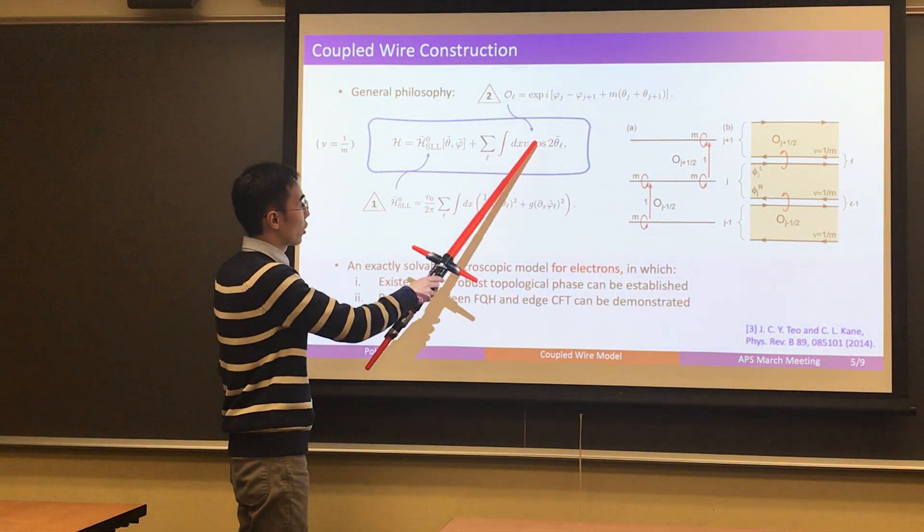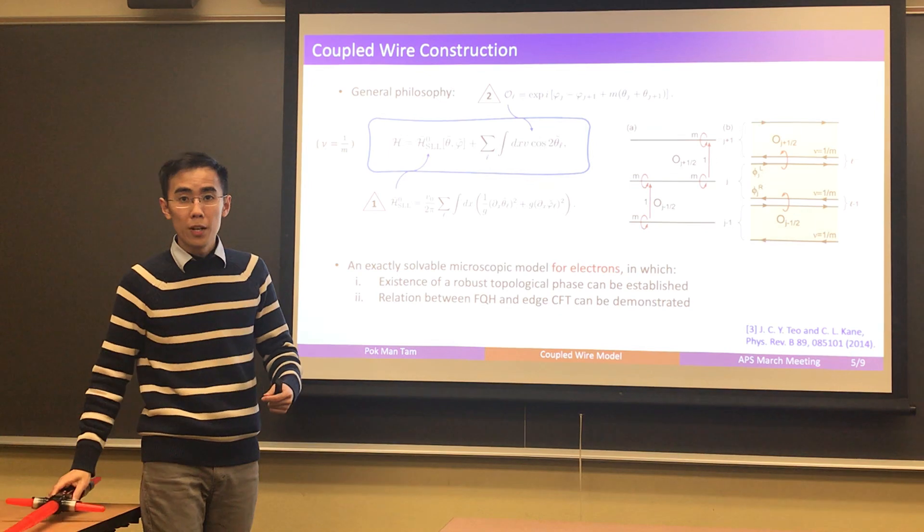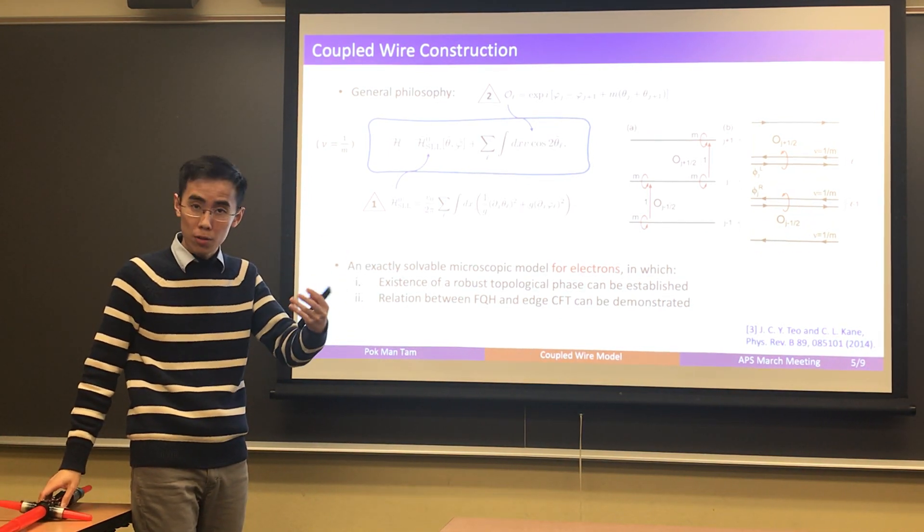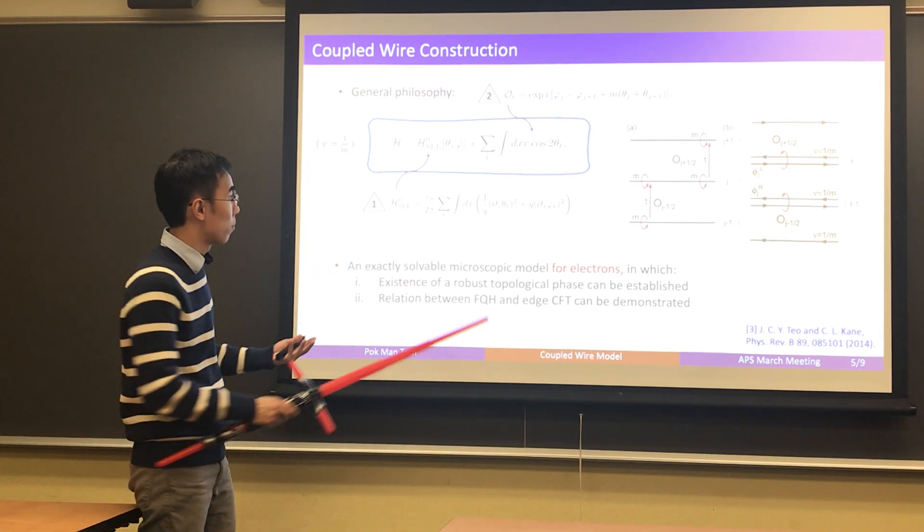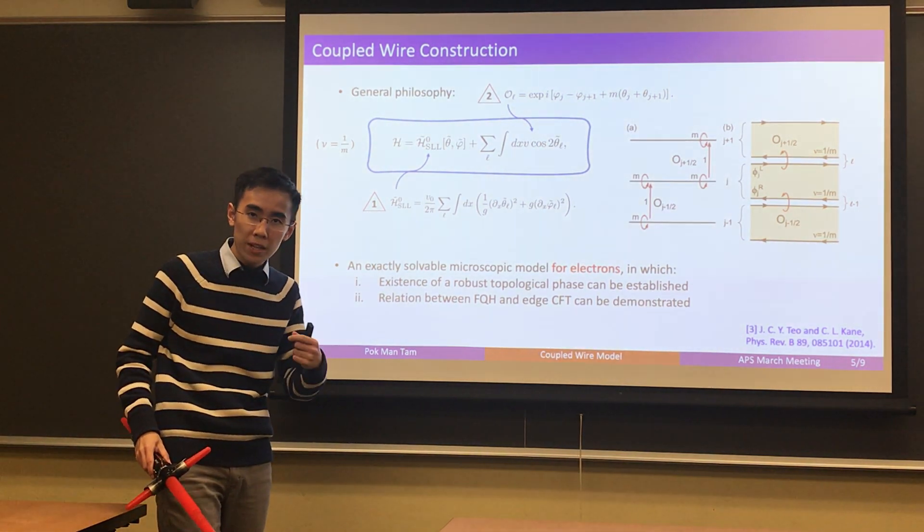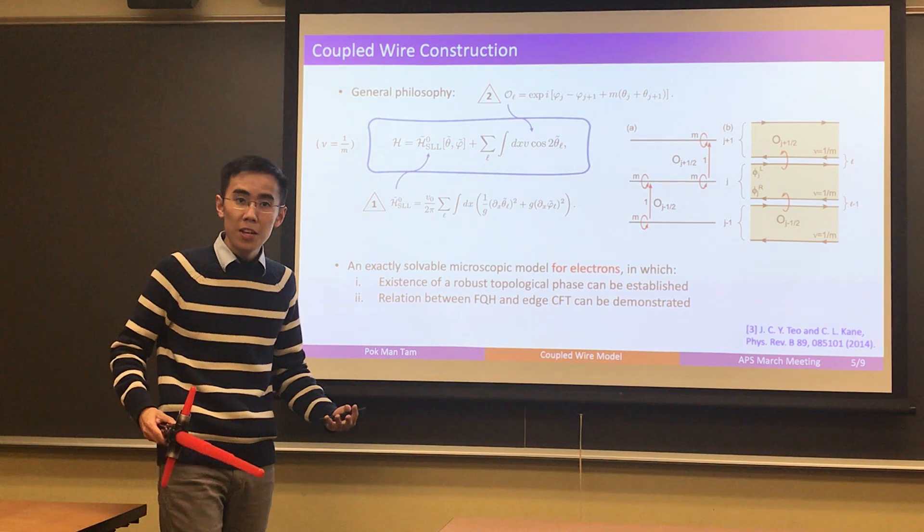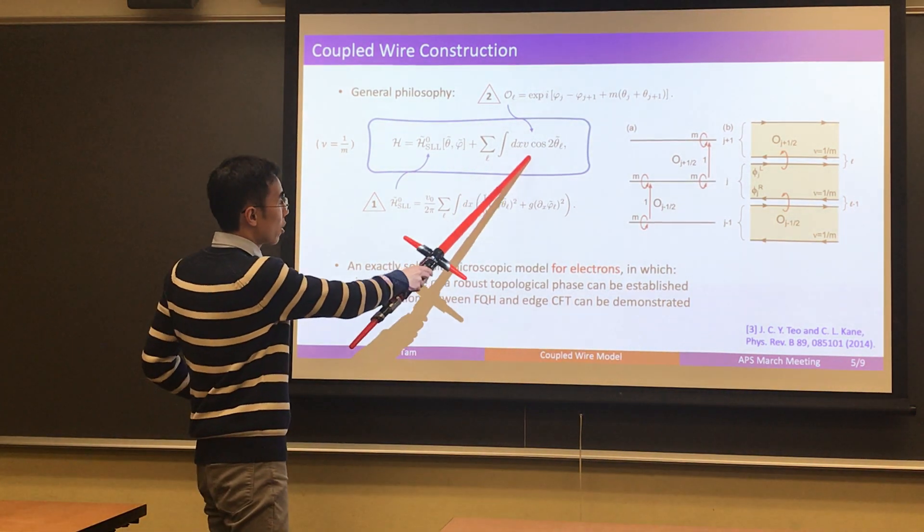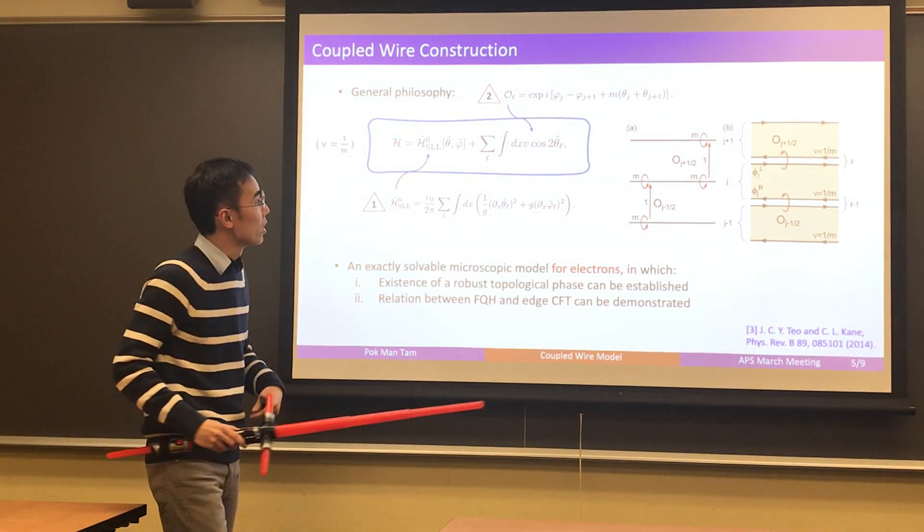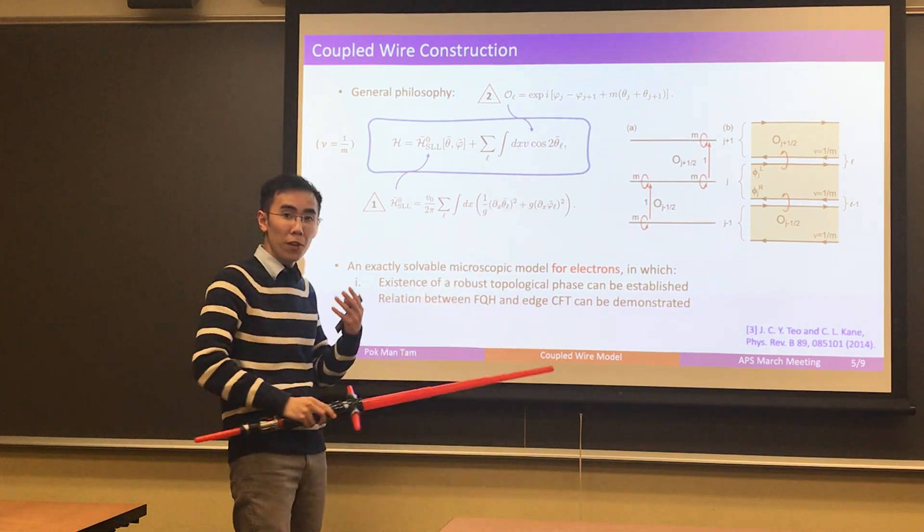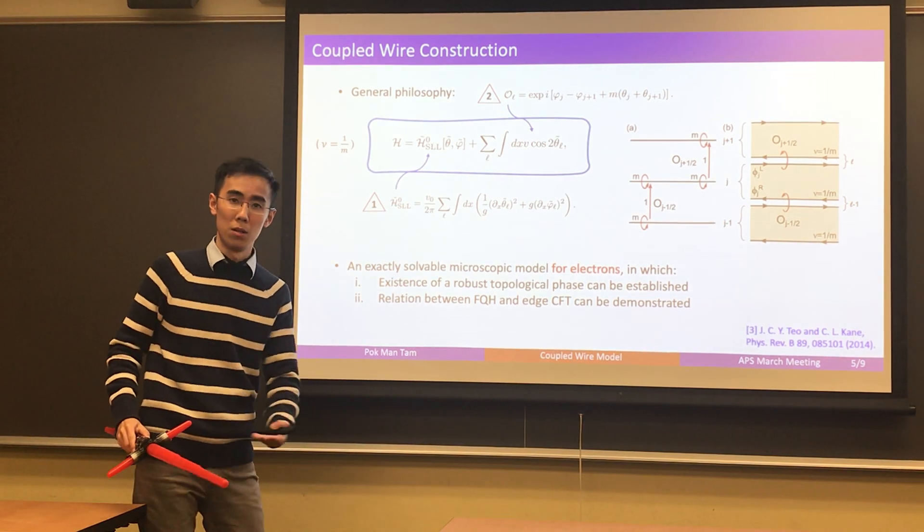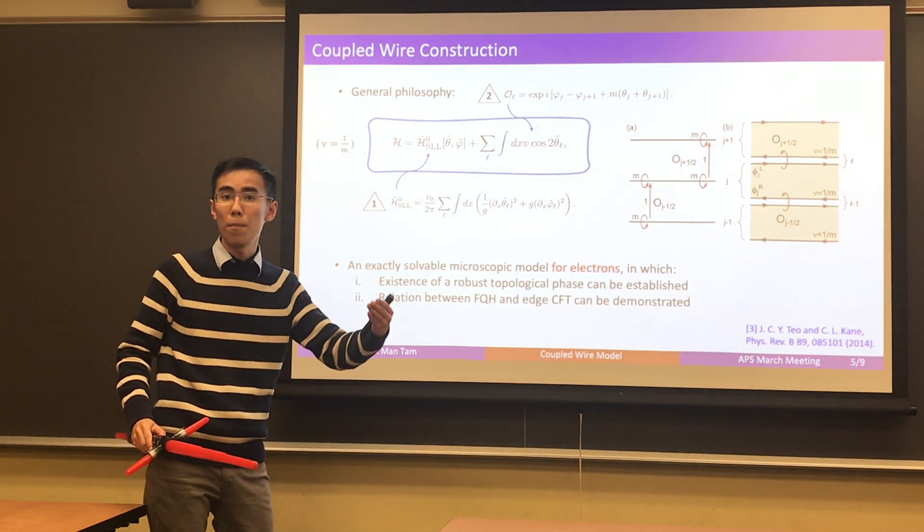So, the second term, which is the cosine term in the sign of the Hamiltonian, would arise by coupling the wires together by tunneling of electrons. And when that term flows to strong coupling, well actually, if you are serious about coupled wire construction, you have to go through some careful analysis to convince yourself and convince others that this term can always be guaranteed to flow to strong coupling. But I won't bother you with that today. We just proceed by saying that, well, if this cosine term flows to strong coupling, this theta, which is a bulk variable, would be pinned at a minimum of the cosine potential. And subsequently, the bulk will be gapped.